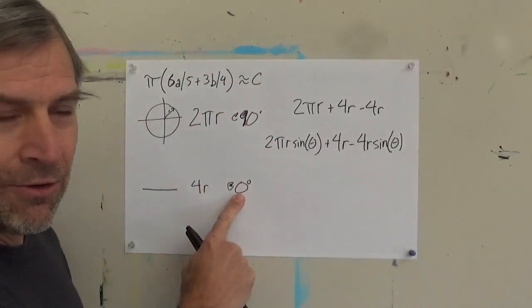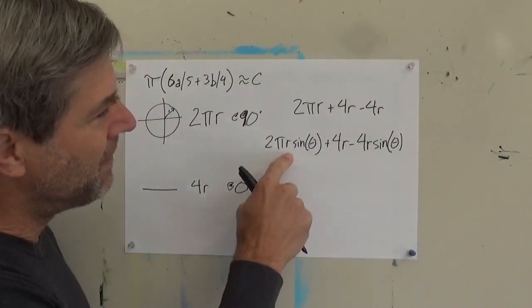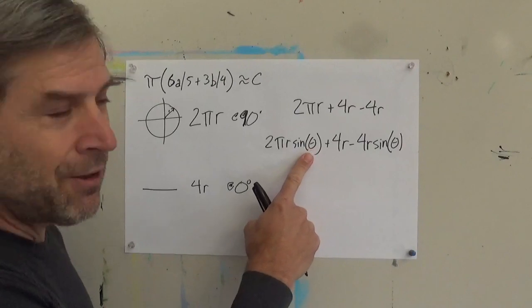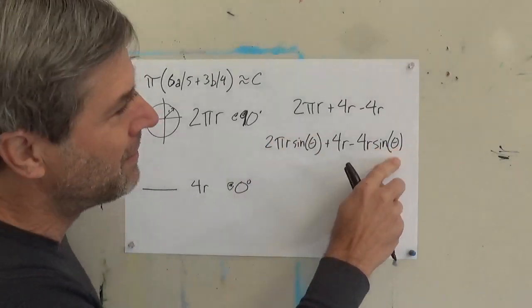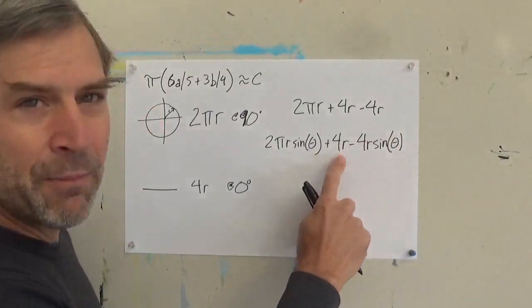But as I get down to 0 degrees, sine of 0 is 0. 2 pi r goes away. 4 sine 0 is 0. I get my 4 r.